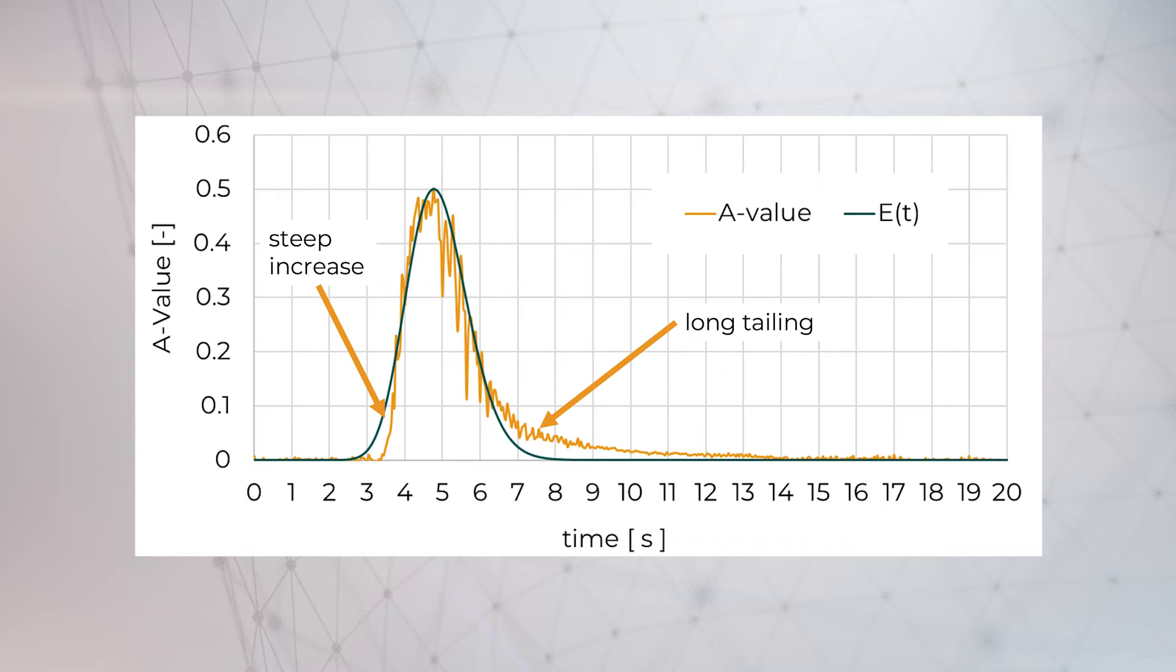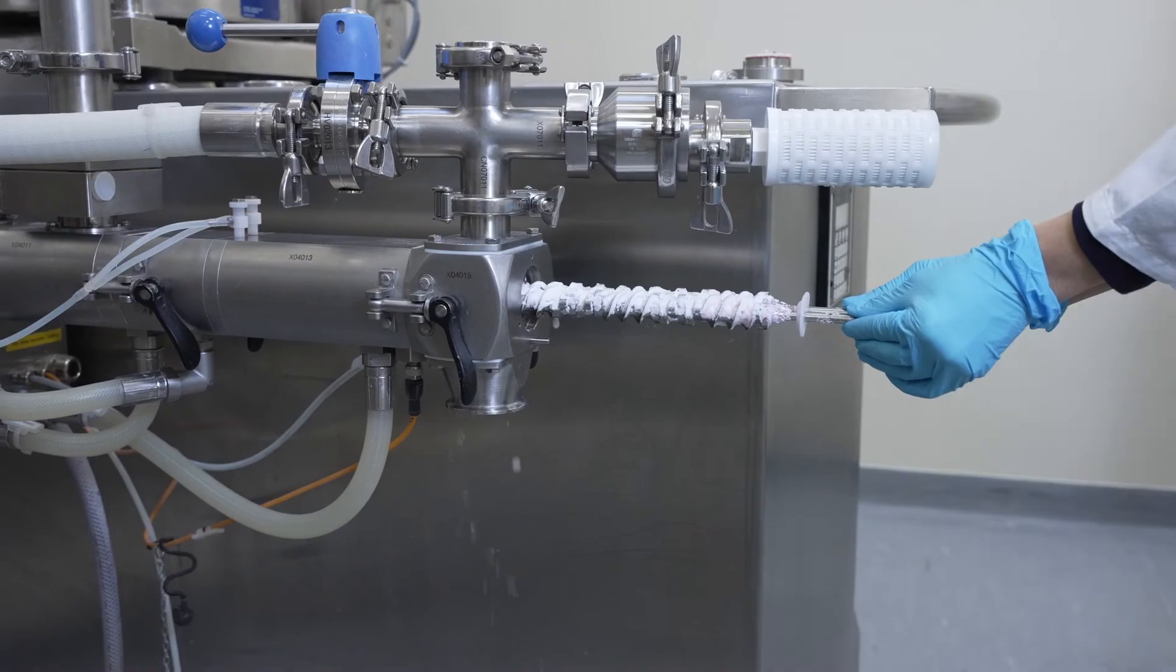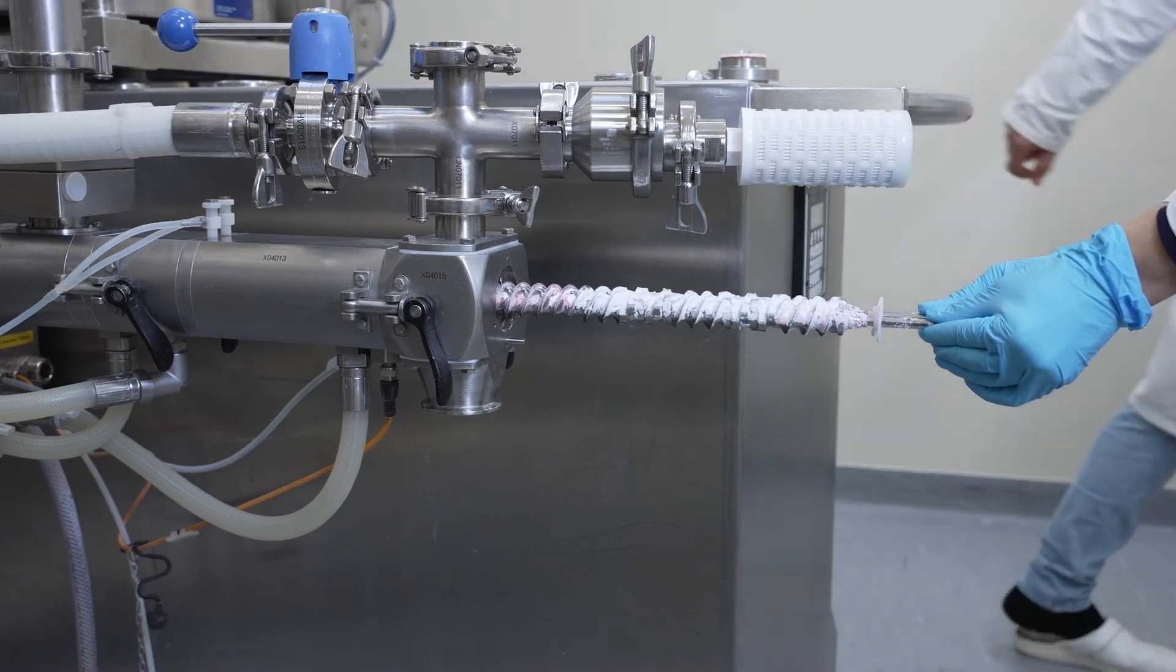Long tailing is always an indicator that you have zones of stagnant flow or material is binding to the equipment surface. This evidently happened here as you can see on the extruder screws.